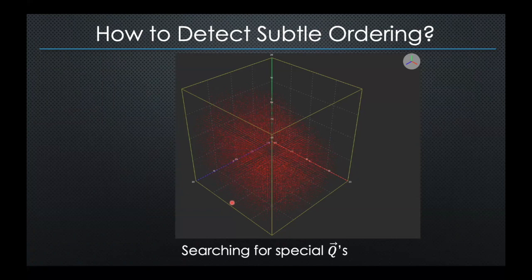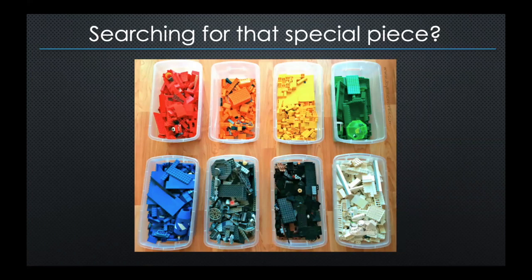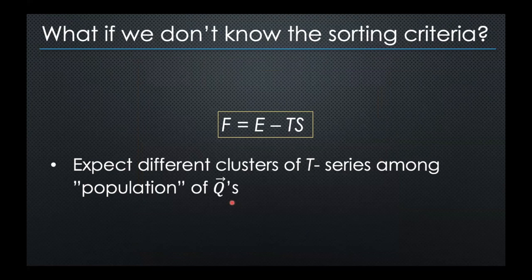The task is that we have 88,000 Brillouin zones and we want to search for special q-points where something interesting is happening. I used to call this a needle-in-the-haystack problem, but here is a more relatable analogy: searching for a special Lego piece in a pile of Lego. Trying to pull out one piece at a time and checking each is a very bad idea — that's the manual approach. The right thing to do is to sort by some criteria. For Lego, we sort by color. If you know the color you're looking for, you can focus on just that color.